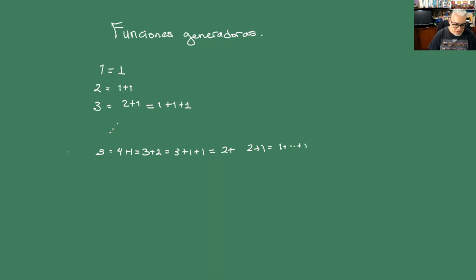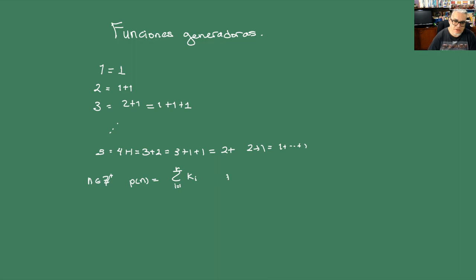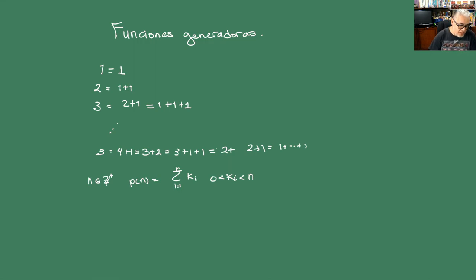Entonces, siempre podemos hacer esa parte. Para cualquier entero n positivo, podemos dar una descomposición de n como una suma de enteros que son más chiquitos: unas k_i, de i igual a 1 hasta cierta r, donde las k_i son más grandes que 0 y son menores estrictos que n. Y podemos tener distintas formas de particionar ese número; no todas tienen por qué ser la misma cosa.